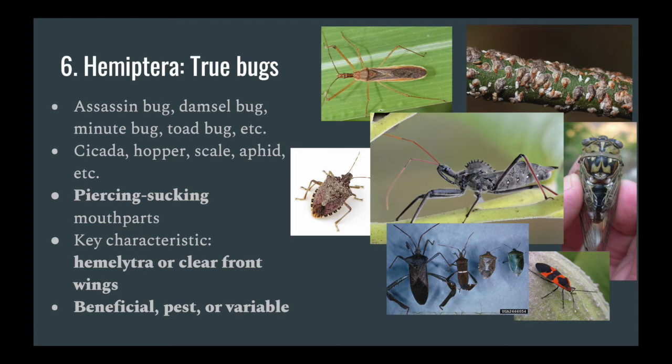Different characteristics of Hemiptera suborders are going to be the very leathery hemelytra, or they're going to have clear front wings like cicadas or lace bugs in the family Tingidae.